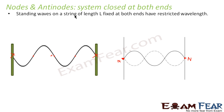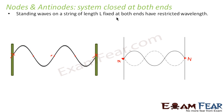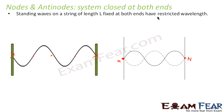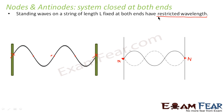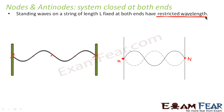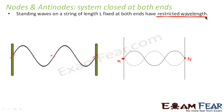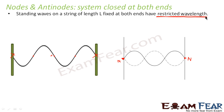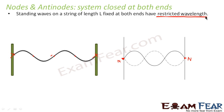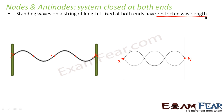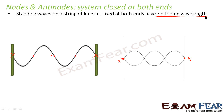Now, standing waves on a string of length L fixed at both ends have restricted wavelengths. What do we mean by restricted wavelengths? That means a standing wave cannot have just any value of wavelength if it is fixed at both ends — it can only have certain specific values of wavelength.